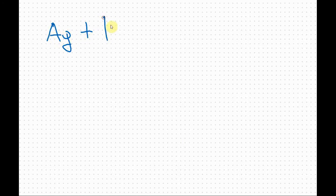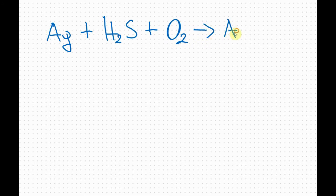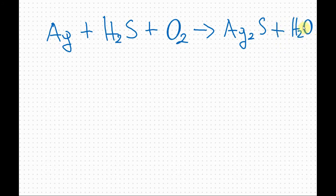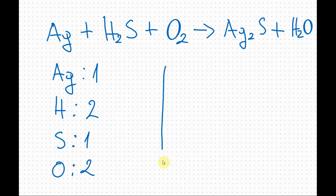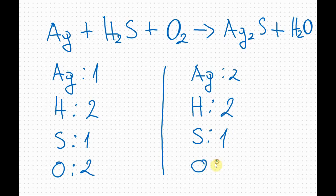Let's do this next example. Chart first. On the left side we have: silver one, hydrogen one, sulfur two, and oxygen one — that's two. On the right side: silver one, hydrogen two, sulfur one, and oxygen one. As we can see, the hydrogen and sulfur are balanced but silver and oxygen are not balanced.